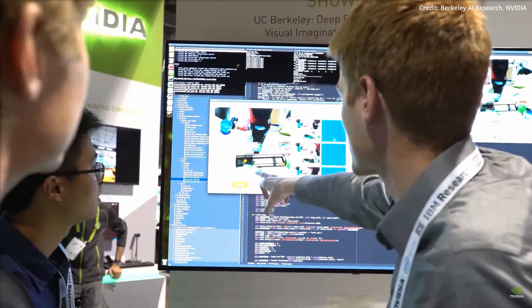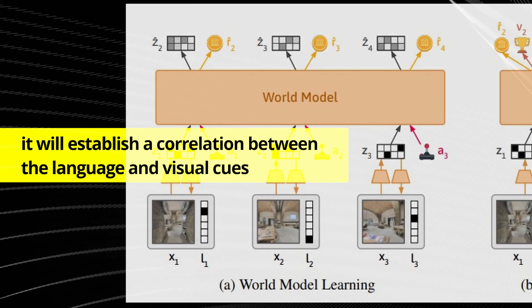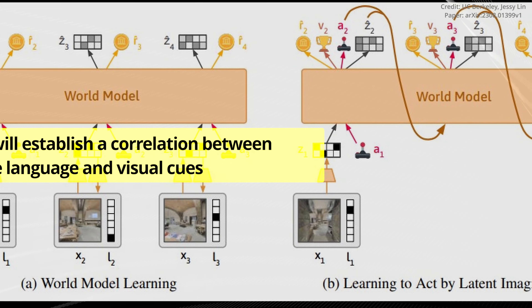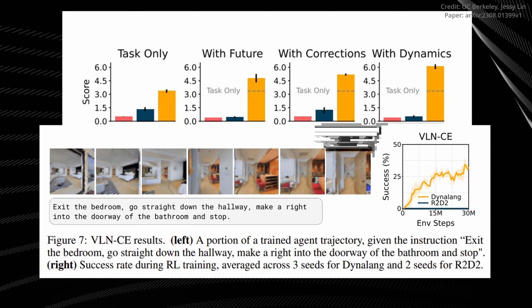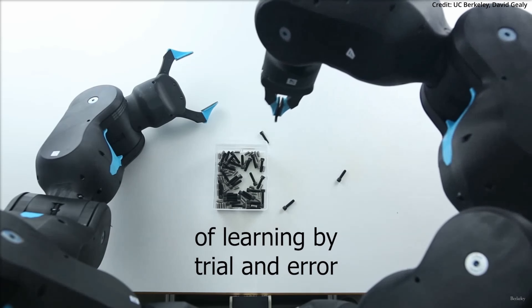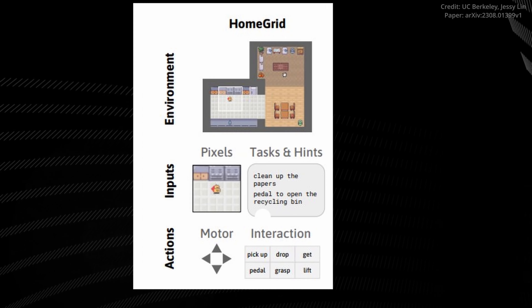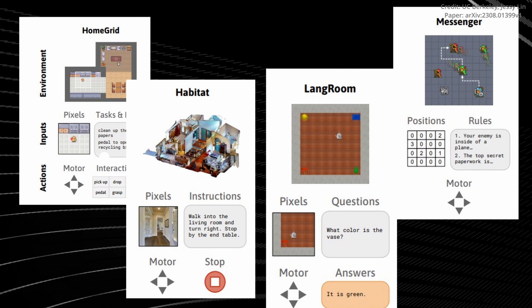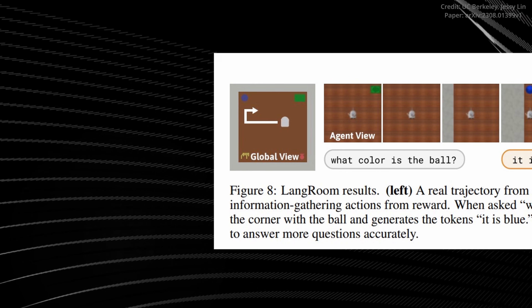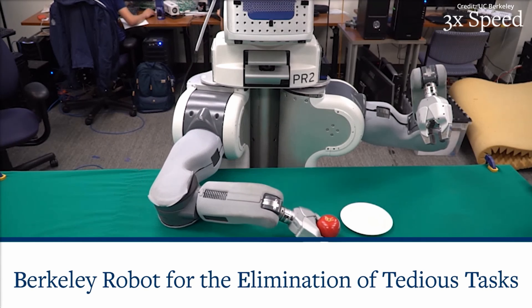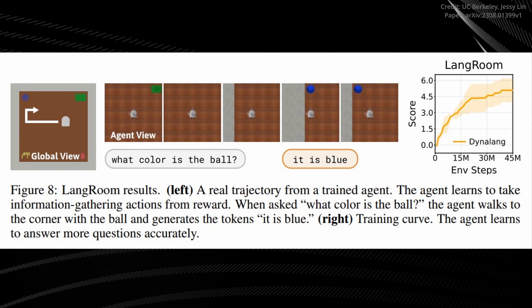Dynalang's intelligence is rooted in Google DeepMind's Dreamer V3, which helps it digest visual and textual input and convert it into a common representation. This agent is trained to predict future representations based upon its activities, mirroring the training of large language models that predict the next token in a sentence. Dynalang diversifies this concept by predicting future text and visual elements in tandem with rewards, setting it apart from traditional reinforcement learning strategies.